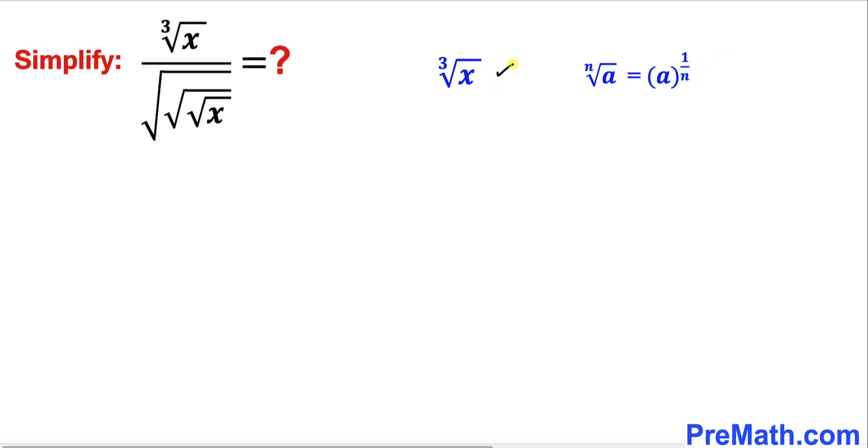Therefore our problem becomes x to the power of 1 over 3. Now let's focus on the denominator part. We are going to use this basic rule once again and convert these radicals into exponential form.